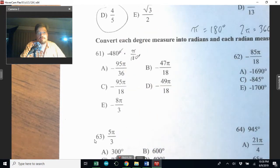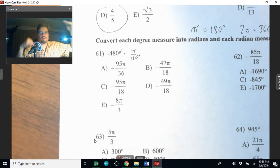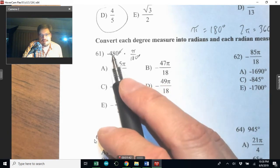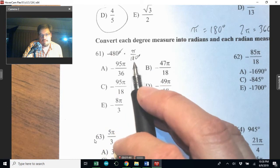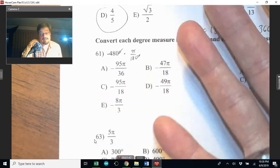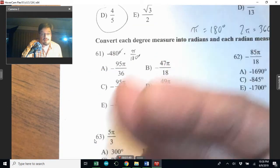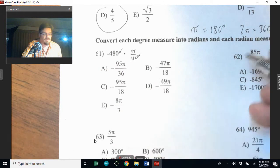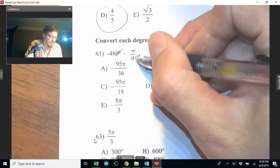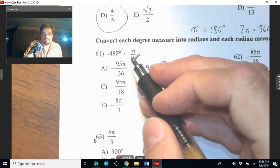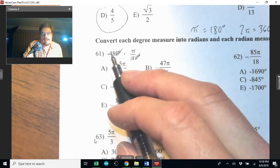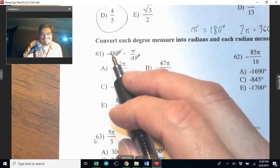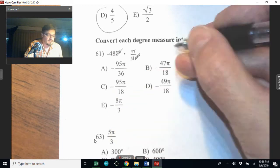Those of you taking chemistry know there's something called dimensional analysis, where the units cancel out themselves when one is above the other. So if I multiply this straight across, I'm going to get negative 480 pi over 180. That's actually the radian, but it's not appropriate. You have to simplify that fraction. I can see that I could divide both of these by 10. Now, 48 is divisible by 6, and 18 is divisible by 6.